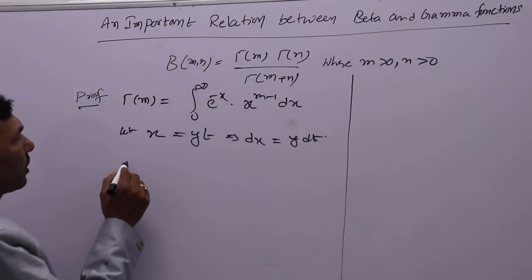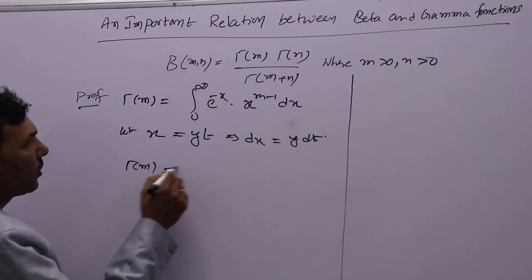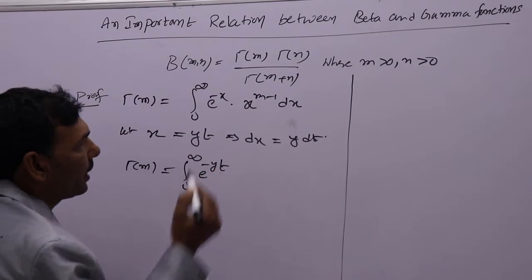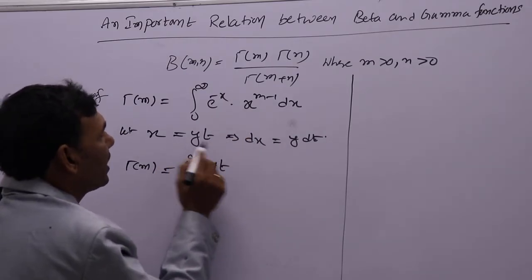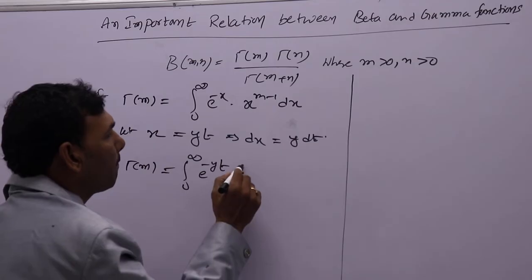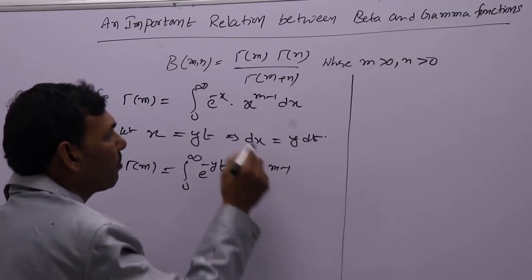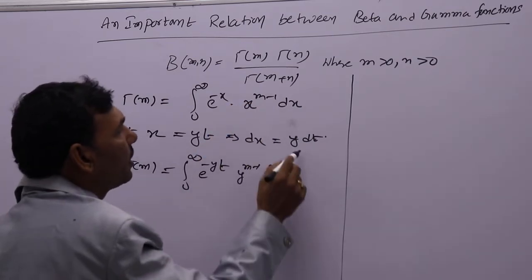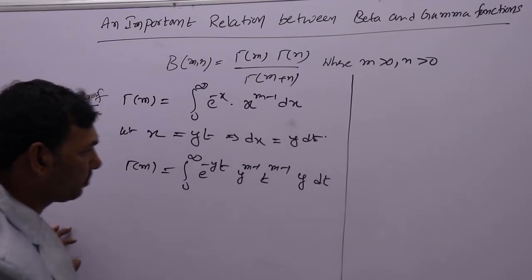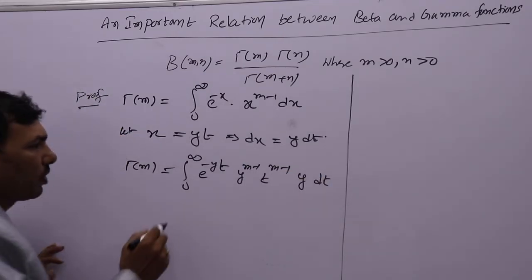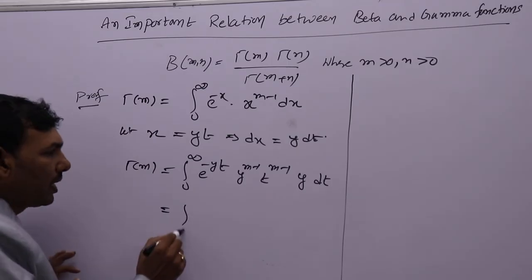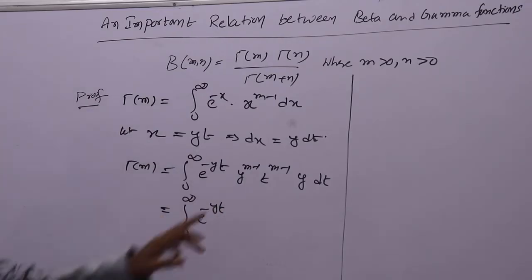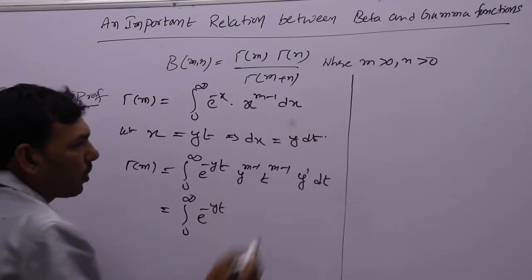Now substitute for gamma(m): integral 0 to infinity. Write in the place of x, yt — e to the power minus yt, and x will be y to the power m minus 1, t to the power m minus 1. If you write in the place of x, yt, you get y power and t power terms. And dx will be y dt.